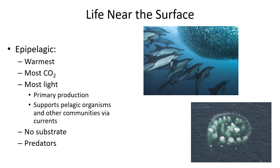Life near the surface is characterized by being the warmest part of the ocean because it's exposed to sunlight. It also has the most carbon dioxide, which comes from the atmosphere and diffuses in. So it's the warmest, has the most light, and therefore these are all the conditions for photosynthesis. It has the most primary production and supports pelagic organisms and other communities through currents. There's no substrate to cling to, and also not a lot to hide from, so you have a lot of predators including dolphins, tuna, and sharks.